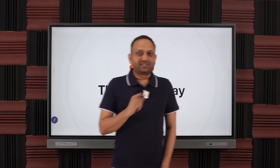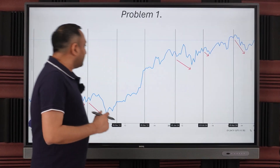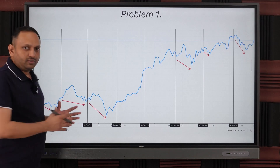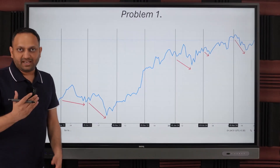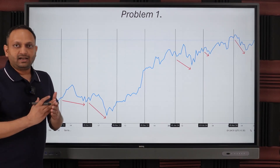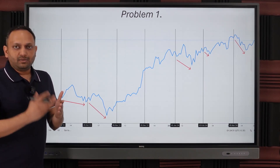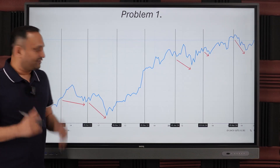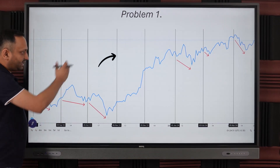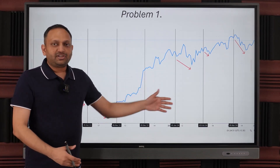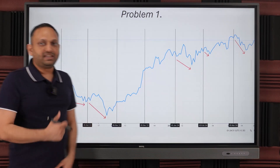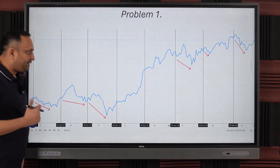Let's first understand what the problem is. If you look at this chart, it is telling you that if you do an SIP, generally people choose a fixed date — let's say the 5th of every month — on which their investment will get deployed in the market. These vertical lines represent the fixed date on which your investment is made, in the traditional way of SIP.